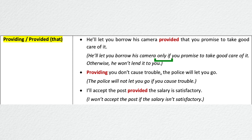You can use these conjunctions in the middle of the sentence or at the beginning of the sentence. The second example: 'Providing you don't cause trouble, the police will let you go.' This means the police will not let you go if you cause trouble. The last one: 'I'll accept the post provided the salary is satisfactory.' What I mean here is that I won't accept the post if the salary isn't satisfactory. As you see, it's all about the emphasis.